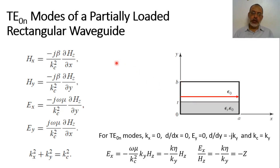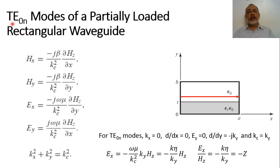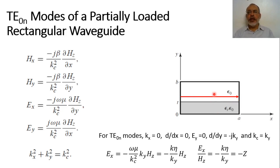We are interested in the transverse electric TE zero-n mode. The TE zero-n mode has electric field in the transverse plane which is constant along x — that is, zero variation in the x-direction — and has n variations in y. So the electric field in this case is parallel to the interface of the dielectric.